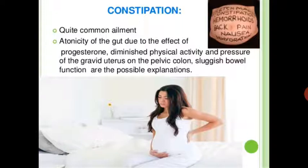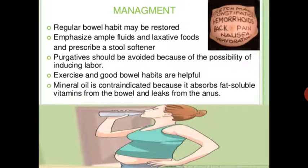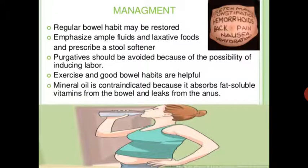Medication — well-known over-the-counter drugs should be administered only when absolutely indicated and prescribed. Next is constipation, a quite common ailment. Attonicity of the gut due to the effect of progesterone, diminished physical activity, and pressure of the gravid uterus on pelvic organs cause sluggish bowel function. Management: regular bowel habit may be restored; emphasize ample fluid and laxative food; prescribe a stool softener. Purgatives should be avoided because of the possibility of inducing labor.